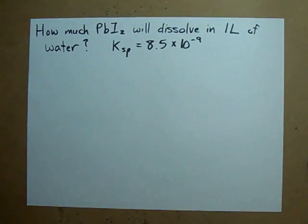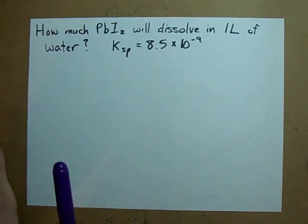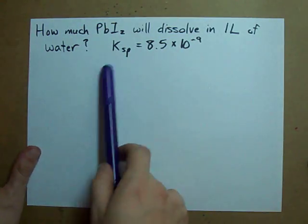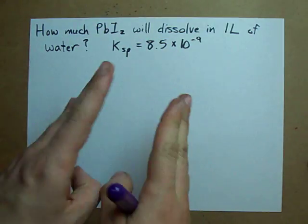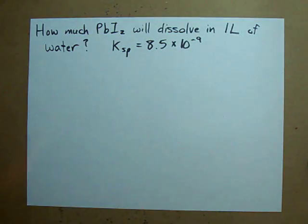How much PbI2 will dissolve in a liter of water? Put another way, if you're given Ksp, how can you figure out the actual concentration of a saturated solution? Check it out.